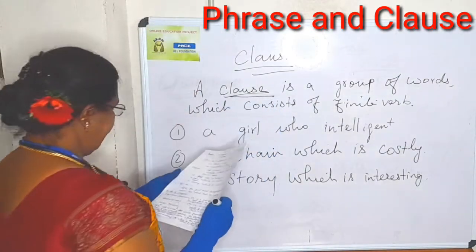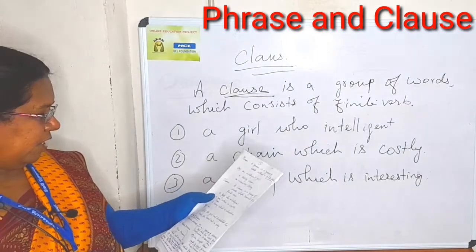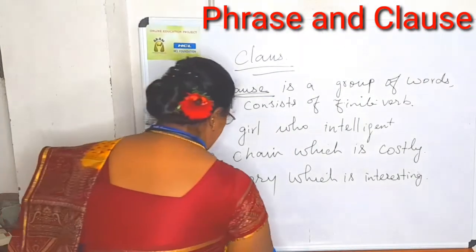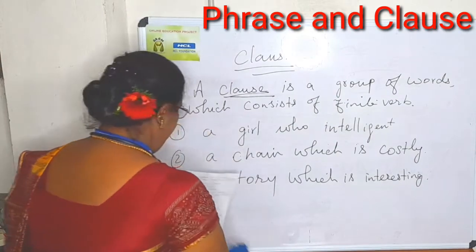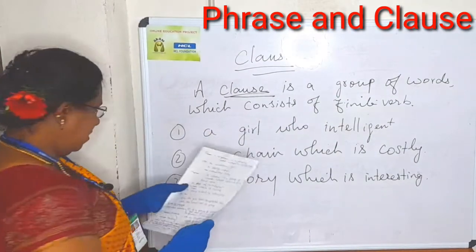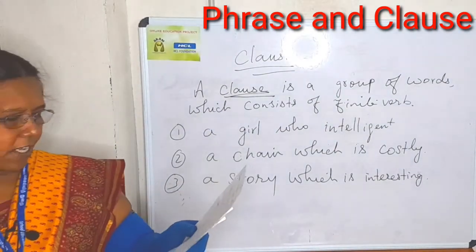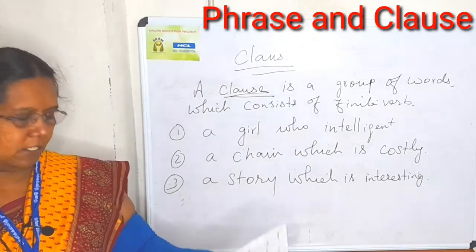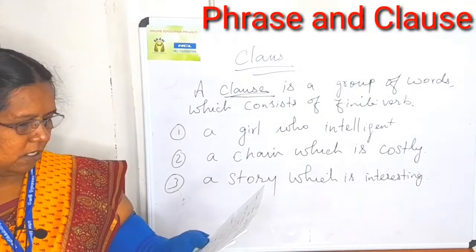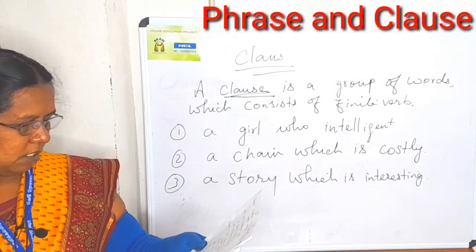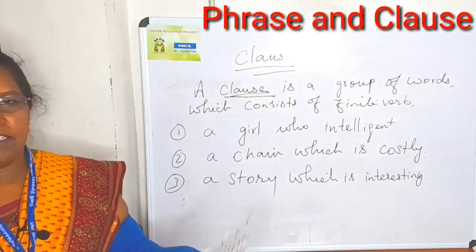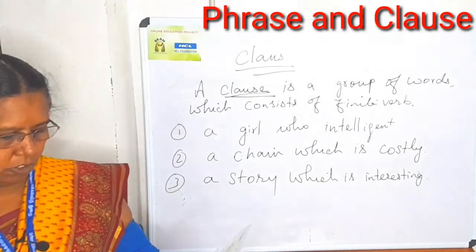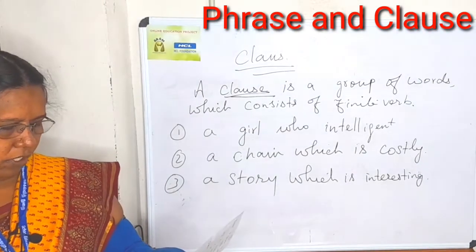In your book, the kinds of phrases are given. There are three kinds of phrases: adjective phrase, adverb phrase, and noun phrase. Under each of these three titles, examples are also given — you can go through them.